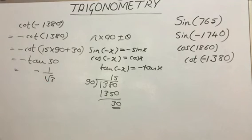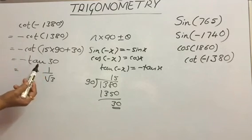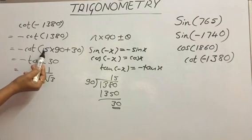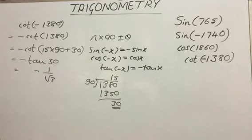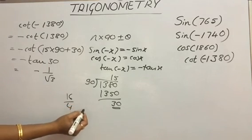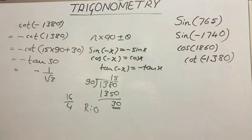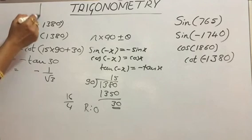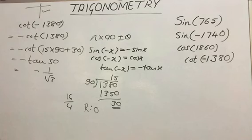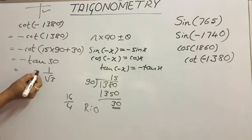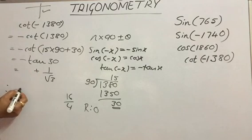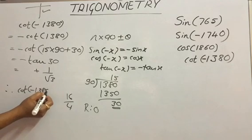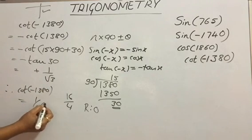Now check the quadrant where the angle lies. It is plus representation, so add 1 to n. n is 15; adding 1 gives 16. Dividing 16 by 4, the remainder is 0. If 0 is the remainder, angle lies in the 4th quadrant. In the 4th quadrant, tan is negative, and as cot is the reciprocal of tan, cot is also negative. So one more minus sign exists. This minus becomes plus. Therefore, cot(−1380°) = 1/√3.